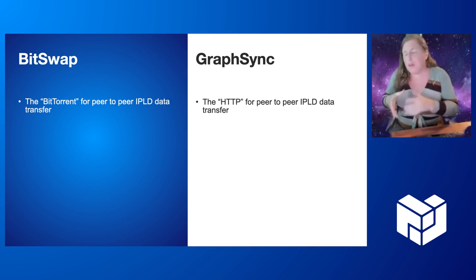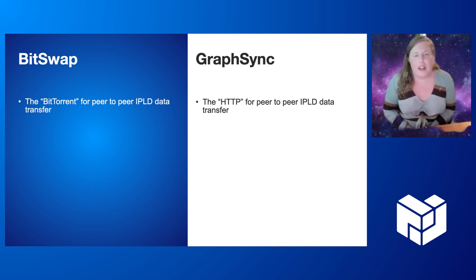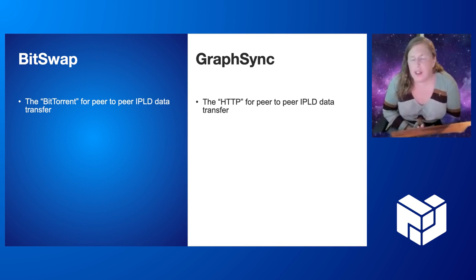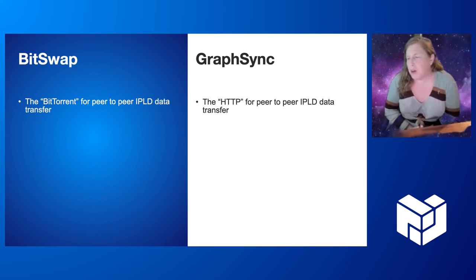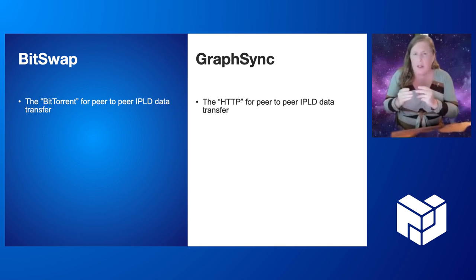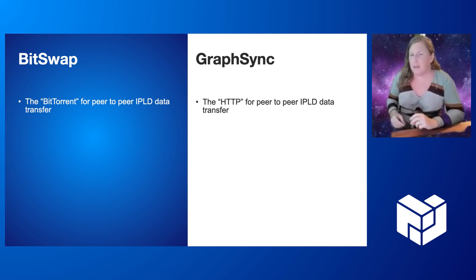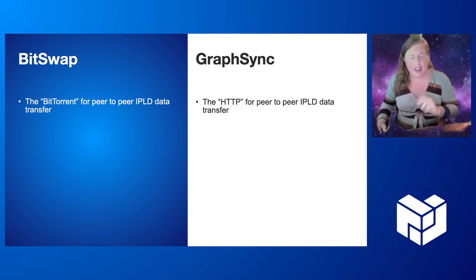Both of these protocols move IPLD data around LibP2P networks. The analogy I've been using to help non-programmers understand is this: BitSwap is roughly designed like BitTorrent, while GraphSync is roughly designed like HTTP.